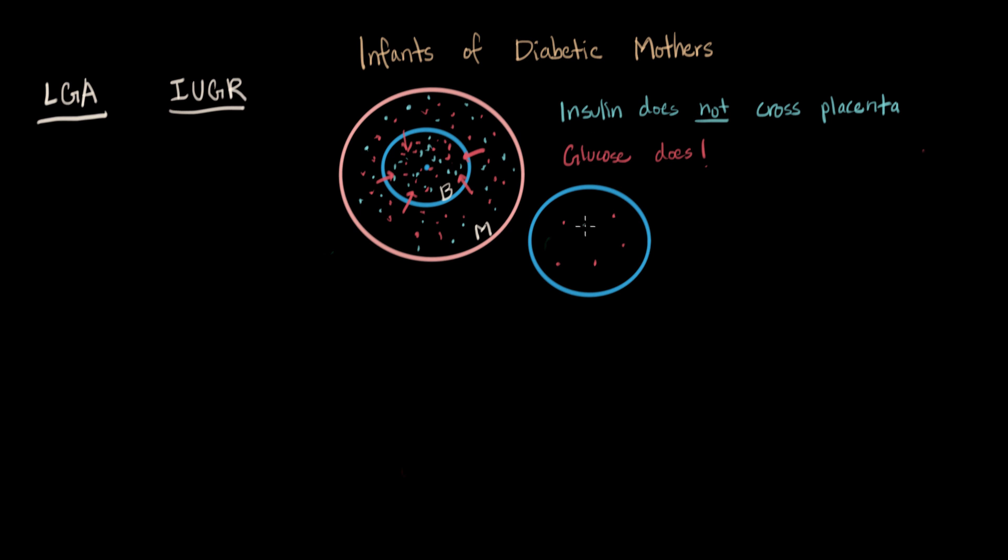However, their body is used to producing a lot of insulin. So the pancreas is already ramped up to overproduce insulin. So in the short term, right after their birth, a big problem is gonna be hypoglycemia.